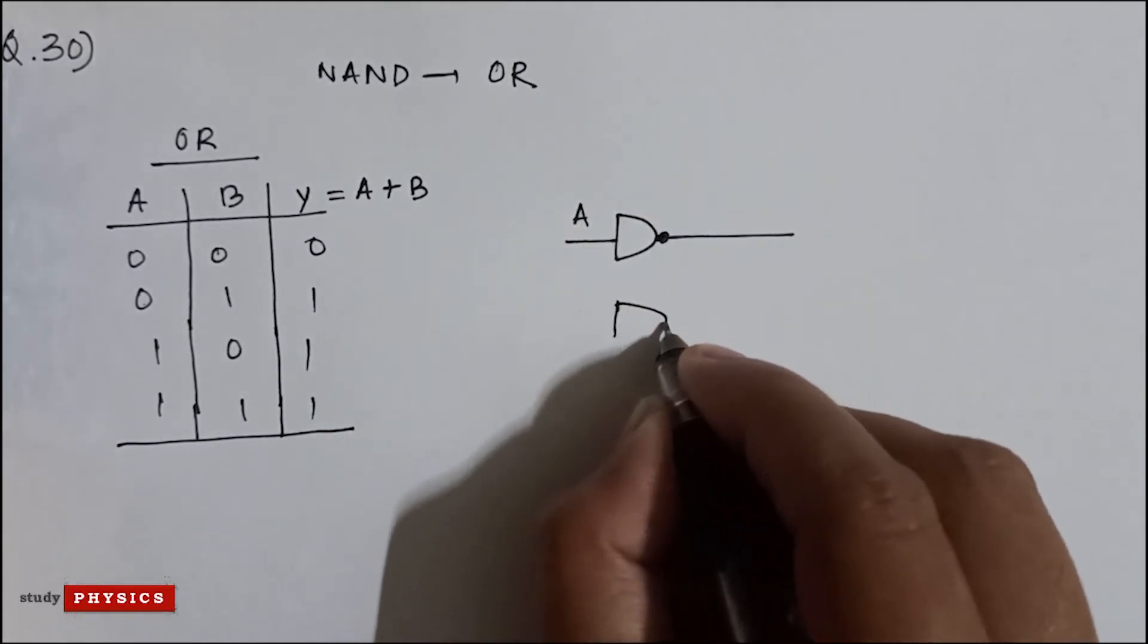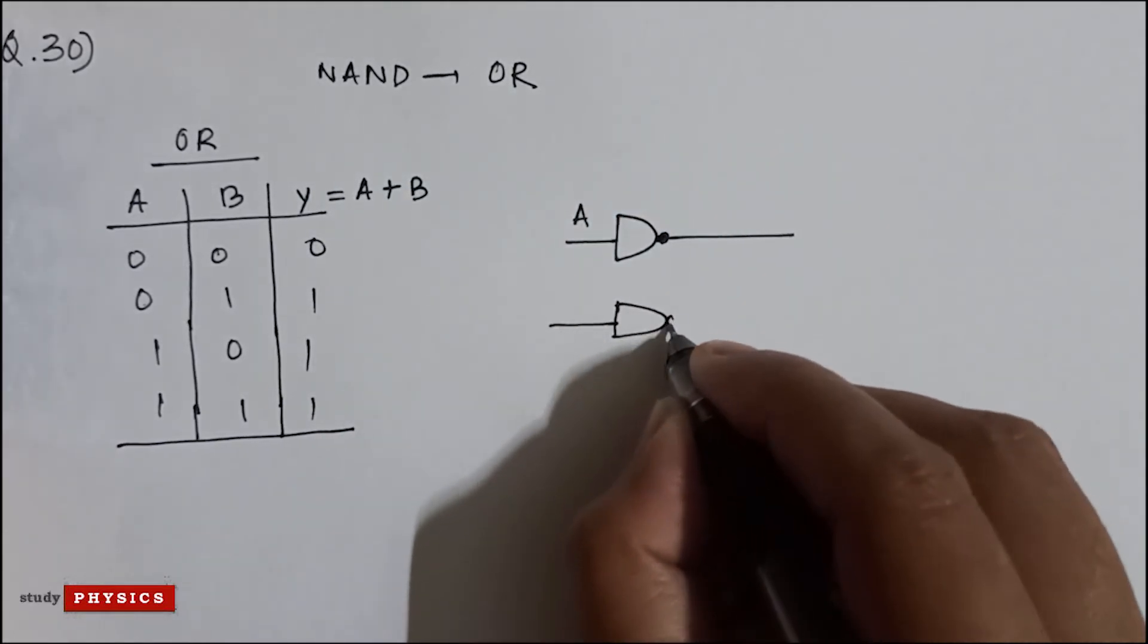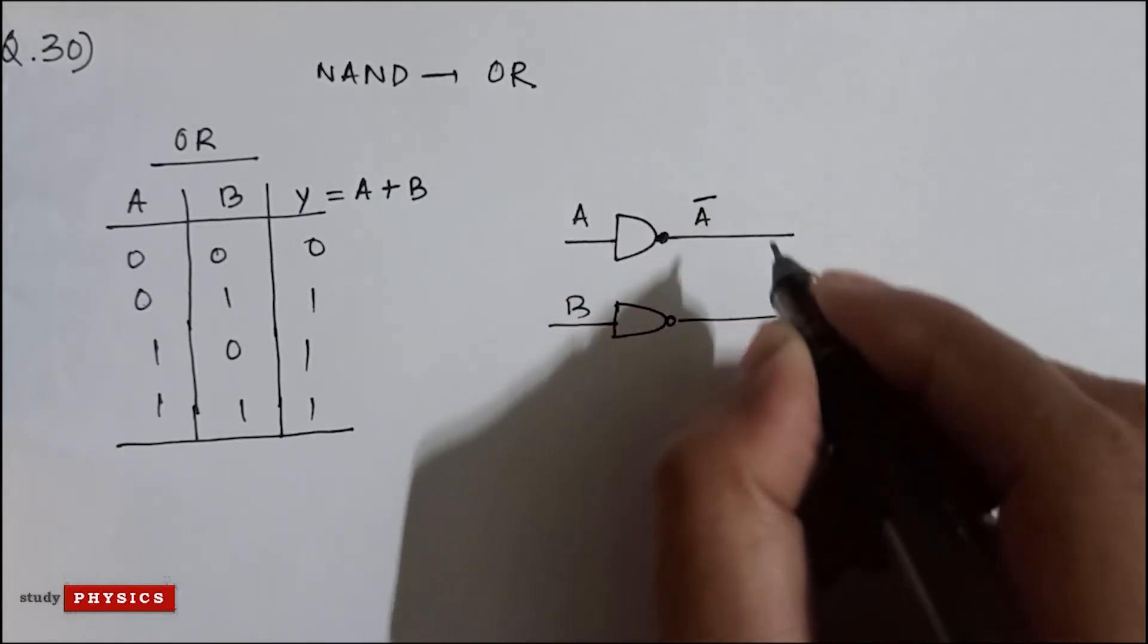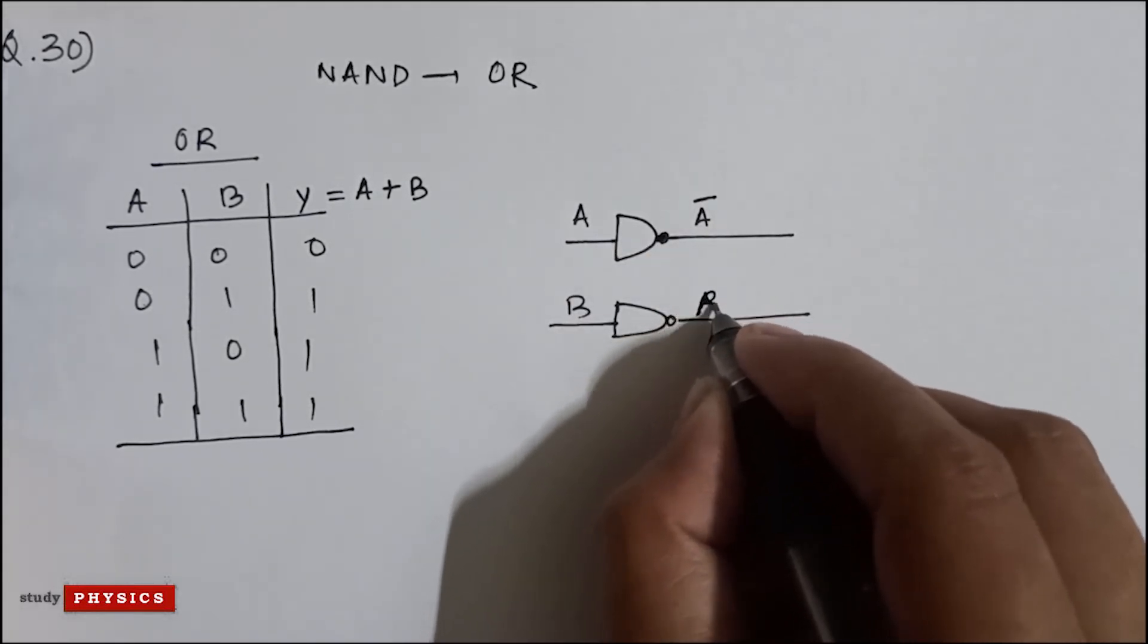This is A, another output, this is B. That means this is A and this is A bar, and this...